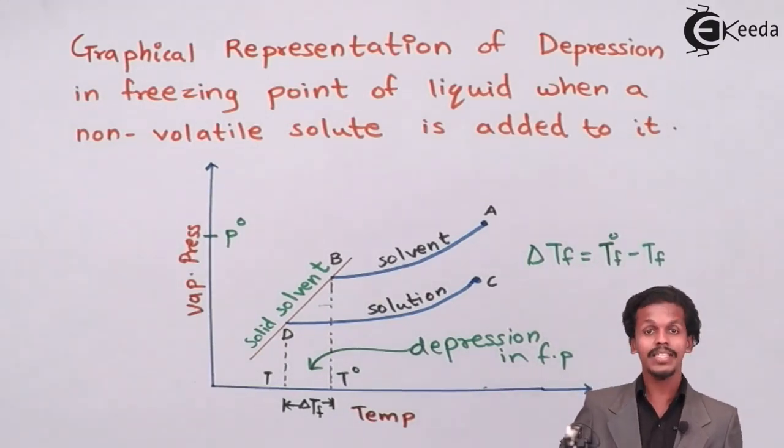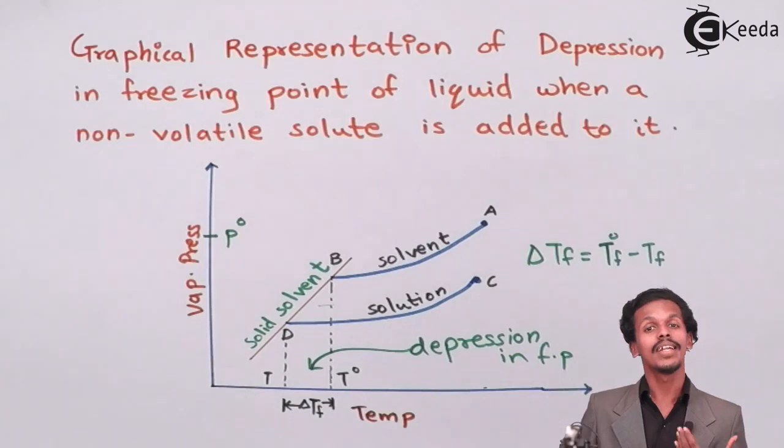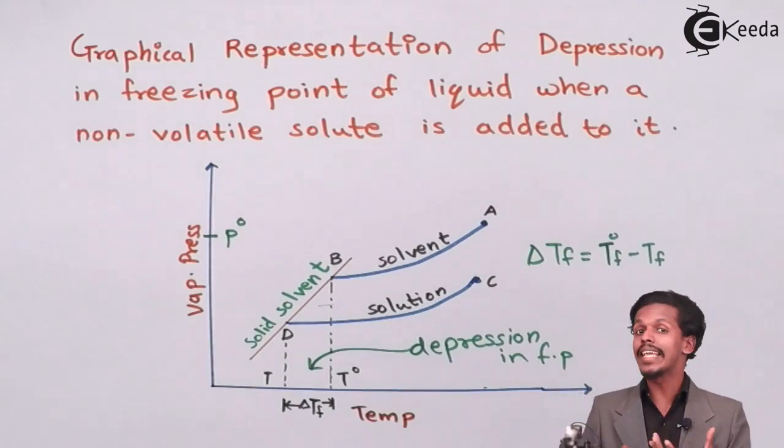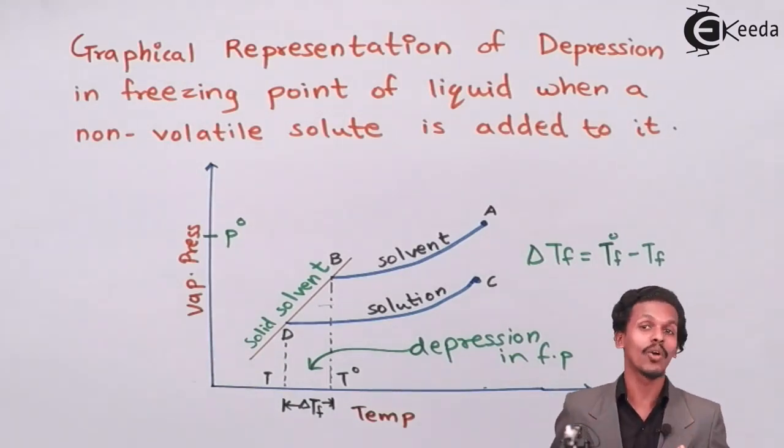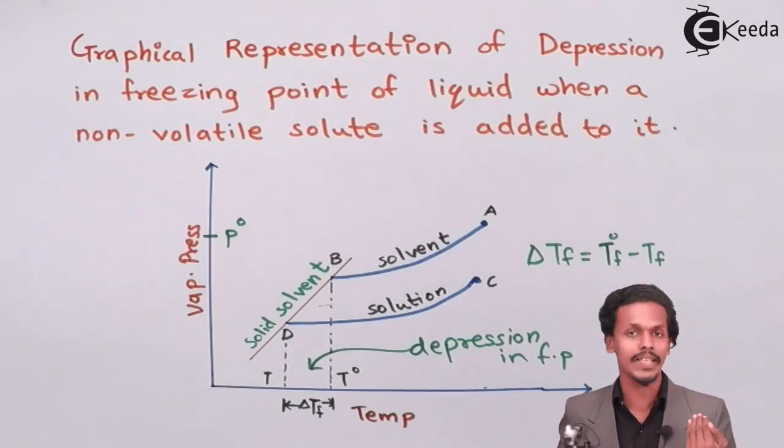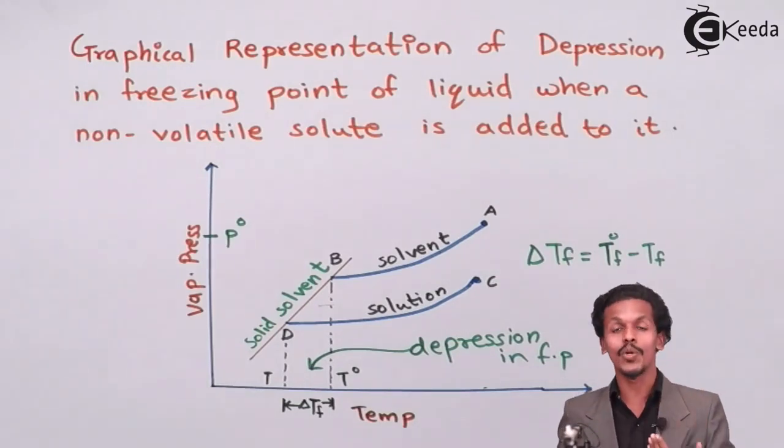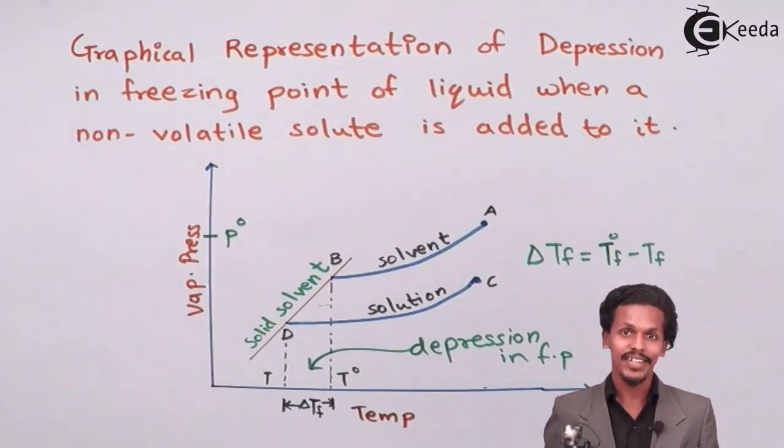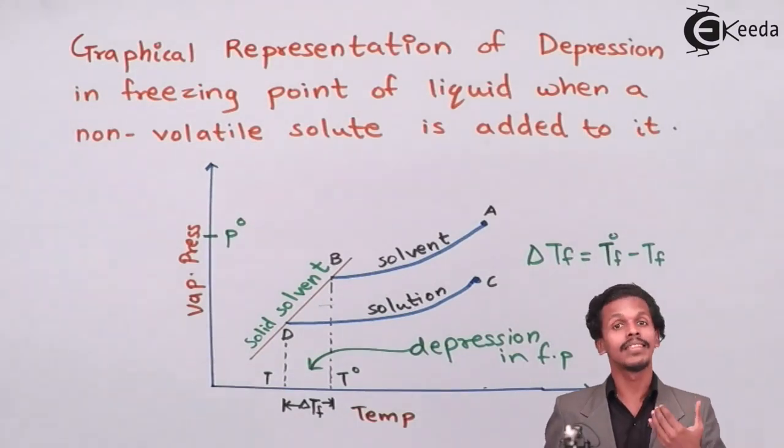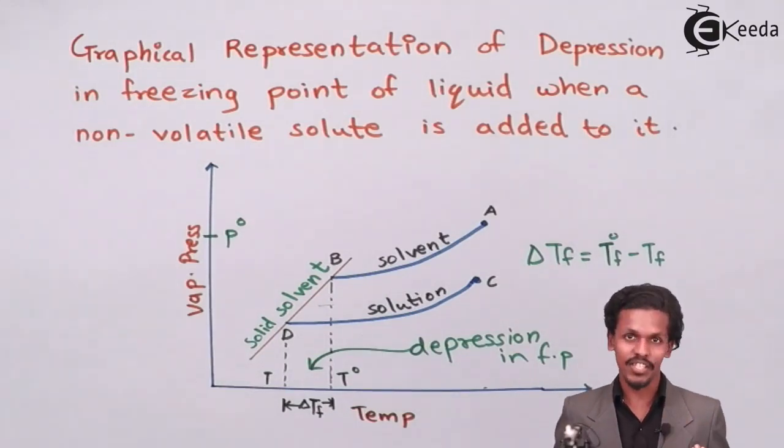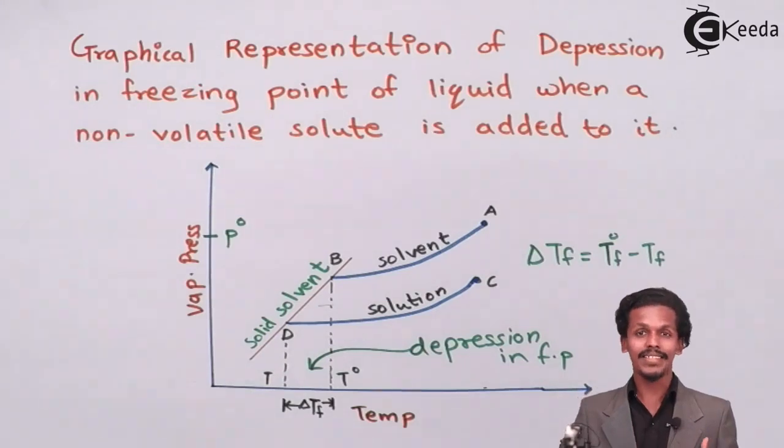Which means T naught F has a higher value compared to TF. So we have decreased the freezing point or we have depressed, we have suppressed the freezing point of the solution by adding solute. The more the amount of solute, then the more depression in freezing point.